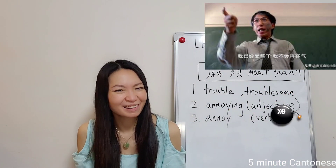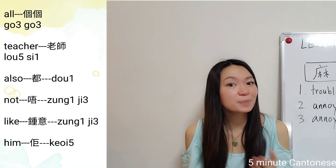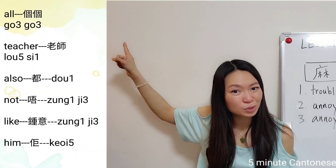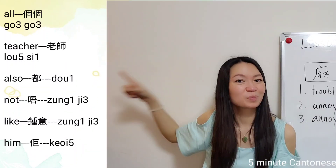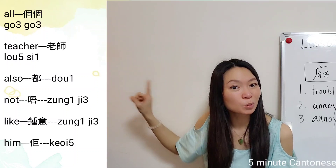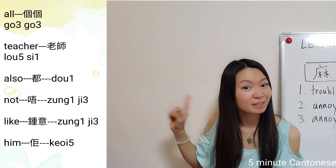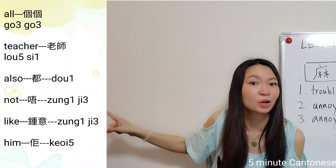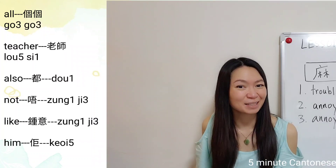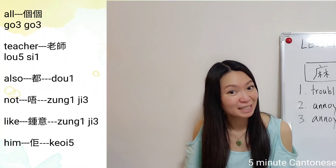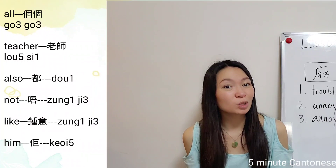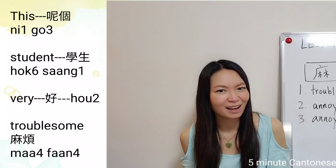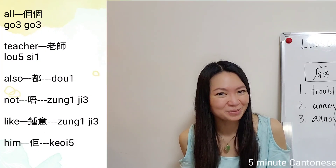All teachers don't like him. This is similar to the usage of 'every' — by doubling the quantifier, 個個, which means 'all.' Then add 老師, and remember from the lesson on 'every,' when we use 'every' or 'all' we add 都. So: 個個老師都唔鍾意佢。 尼個學生好麻煩。個個老師都唔鍾意佢。